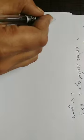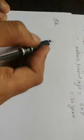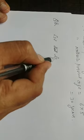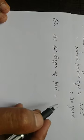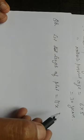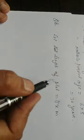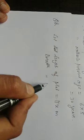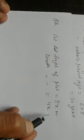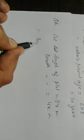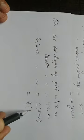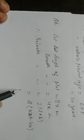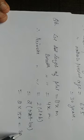Let the length and breadth of the plot be 11x and 4x meters respectively. The perimeter of the rectangular plot is equal to 2 into (L plus B), which is 2 into (11x plus 4x), equal to 2 into 15x, equal to 30x meters.